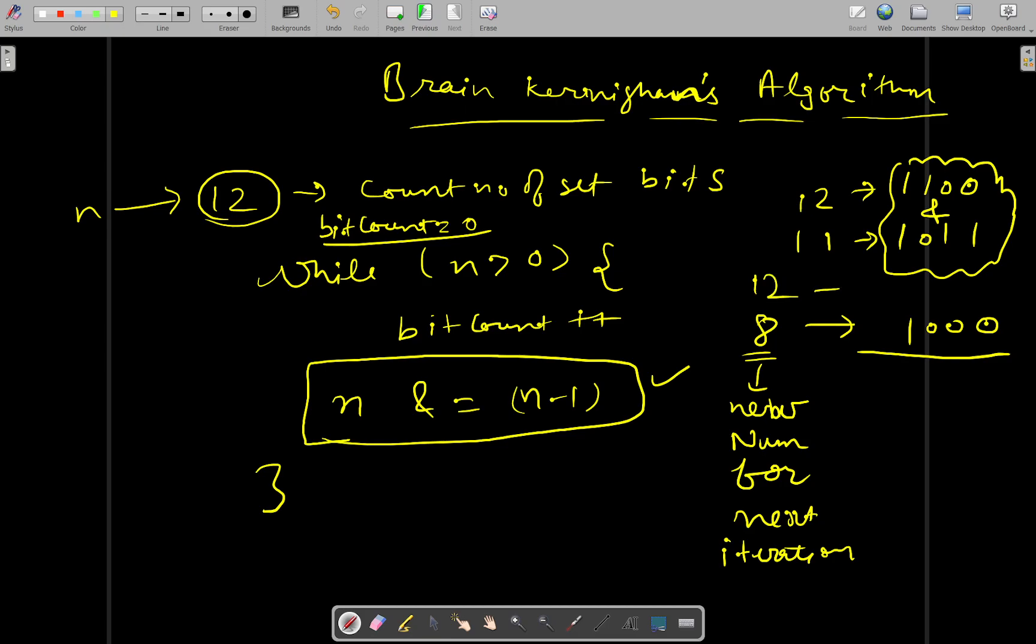If you compare it with 12, 12 binary representation which was 1100, so only the difference is in the last set bit. This last set bit was turned off. Similarly, you will keep continuing and each time your last set bit will be turned off. So this turns off the last set bit of the current value of n and updates the value of n.